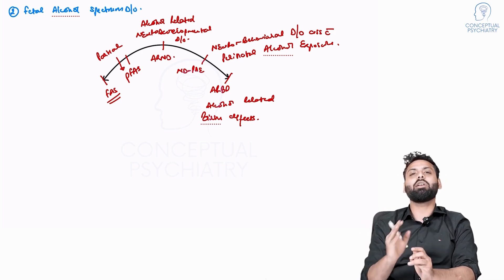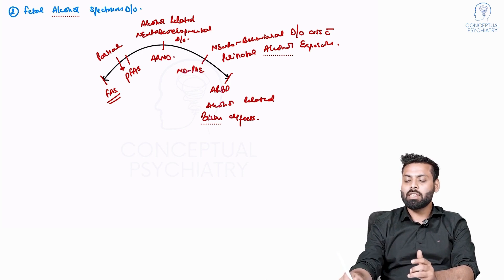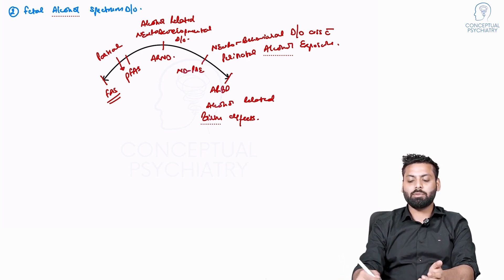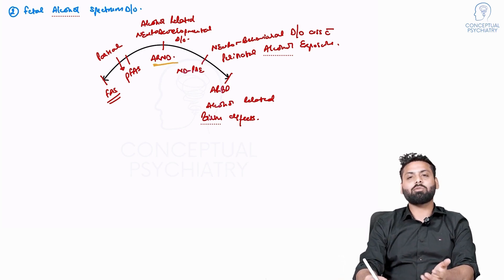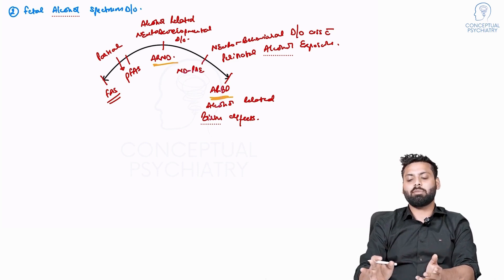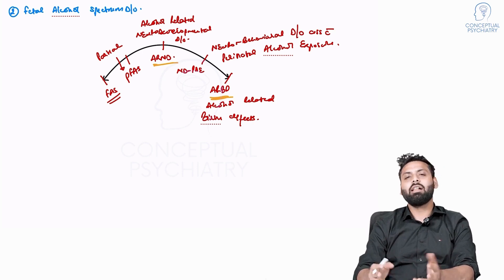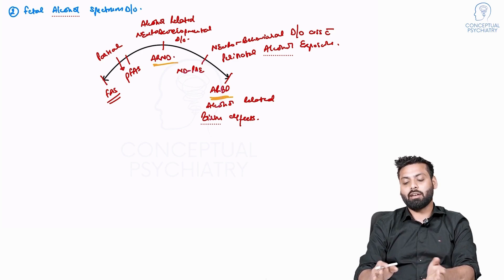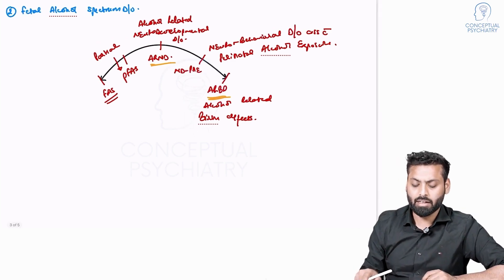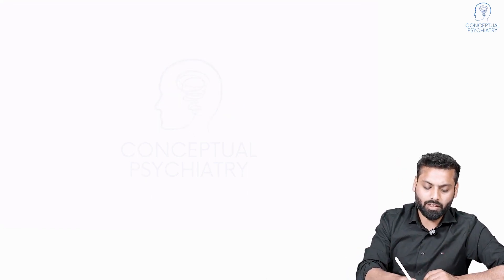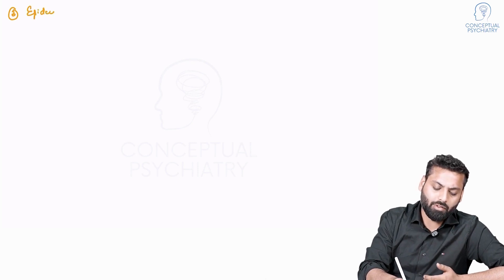Fetal alcohol syndrome is not just a single entity — we should be aware of all the terms. If a question comes on ARND or ARBD, the subject matter remains similar. But if we do not know what alcohol related neurodevelopmental disorder or neurobehavioral disorder means, we will not be able to write as well as we can. Since this is more of a theoretical topic, it becomes easy to compile everything in one place.